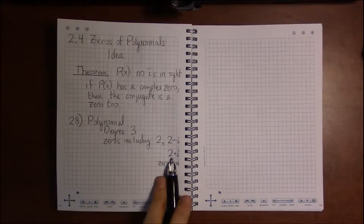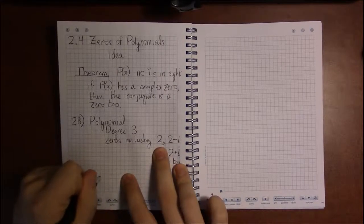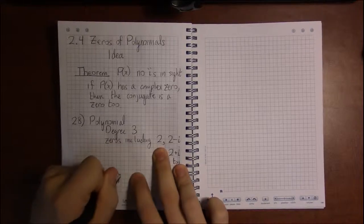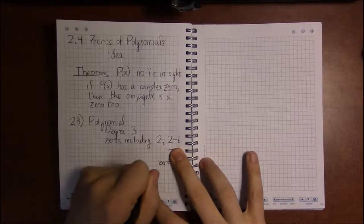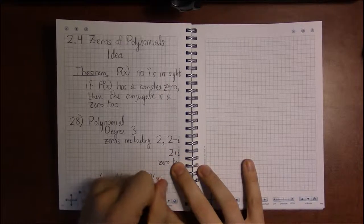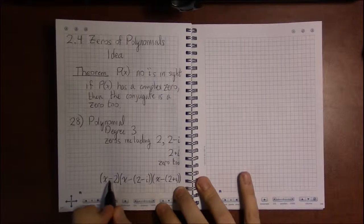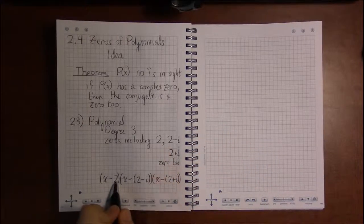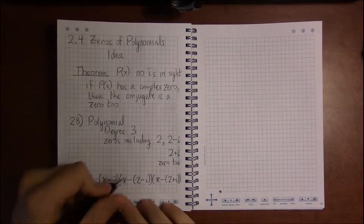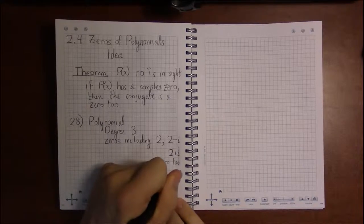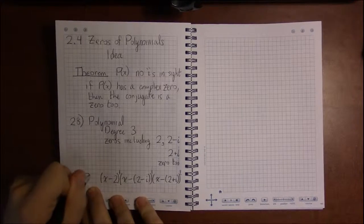Since every zero corresponds to a factor, I'm just going to write out the factors corresponding to each one. For 2 it's (x-2), for 2-i it's (x-(2-i)), and for 2+i the factor is (x-(2+i)). It's always x minus the zero—that's the factor that corresponds to the zero. And this will be a degree 3 polynomial because if you add up the multiplicities, they're all multiplicity 1: 1+1+1 will be degree 3. This is satisfactory for me as an answer.